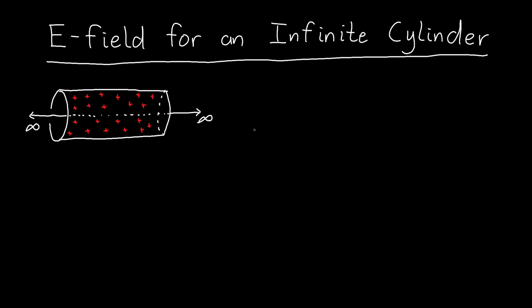In this video we're going to go over how to find the electric field both inside and outside of an infinite cylinder. So let's say that I have an infinite cylinder with radius a. It has some charge density rho inside it, and it also has a permittivity of epsilon naught — the same as free space.